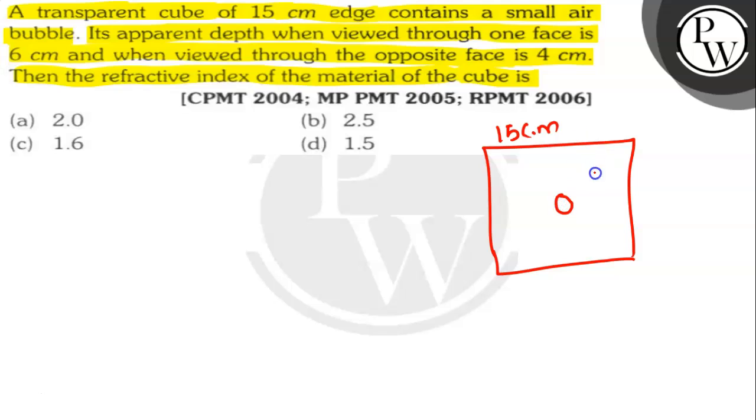Its apparent depth when viewed through one face. Suppose one observer is watching from here. One face is 6 cm apparent image distance. And another on the opposite side from here, one observer is facing, watching this. It is seeing this bubble is here.